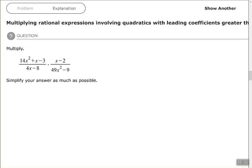So the key here is going to be to factor, factor and simplify. Now for the 14x squared plus x minus three, we have a little bit of extra work to do. So let's come out here and use the AC method.